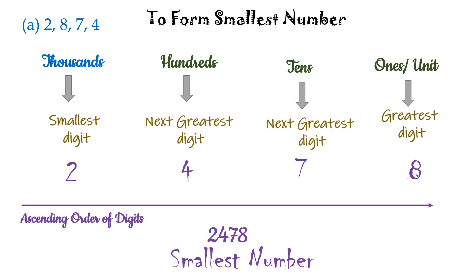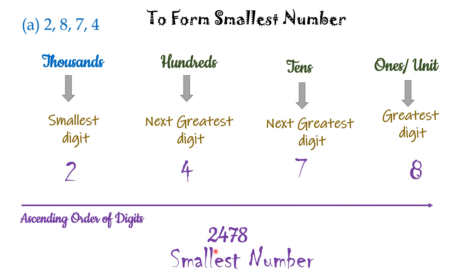And for the smallest number, हम digits को ascending order में place करेंगे. Means सबसे छोटे digit सबसे बड़ी position पर होगा, जो यहां पर thousands place पर है. Then towards the right side, हमें greater digits choose करनी है, जैसे की यहां दिखाया गया है. So, smallest number would be 2478.